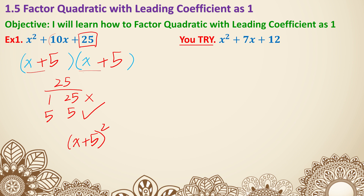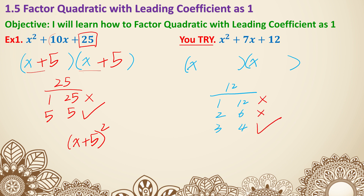Moving on to example 2. Same thing — start with x inside each parenthesis. We need two numbers that multiply to get 12. Breaking it down: 1 and 12, 2 and 6, 3 and 4. Checking addition: 1 plus 12 is 13 — no. 2 plus 6 is 8 — no. 3 plus 4 is 7 — yes, that's the number we need. So the answer is x plus 3 times x plus 4.